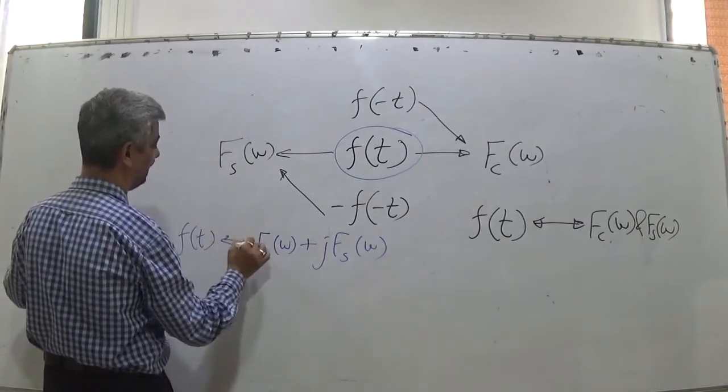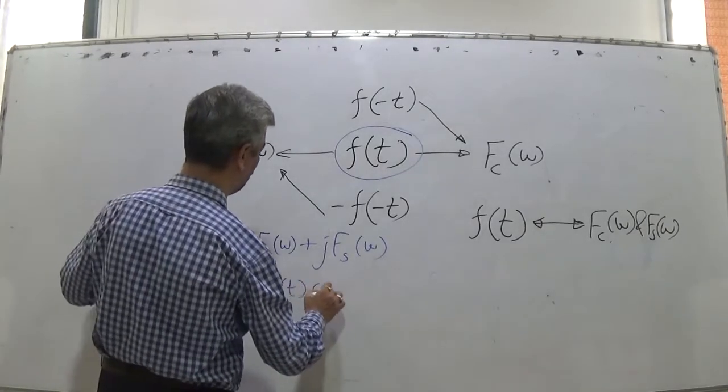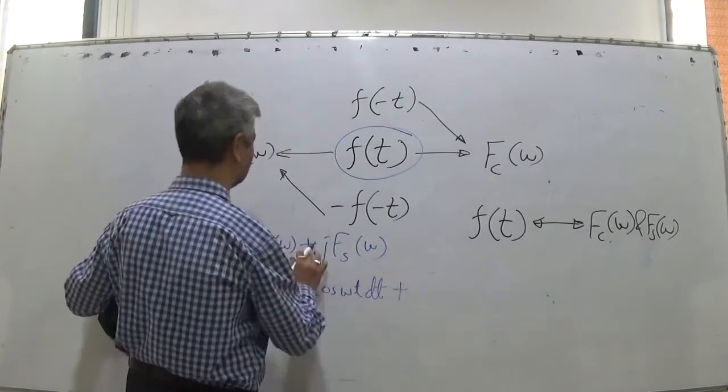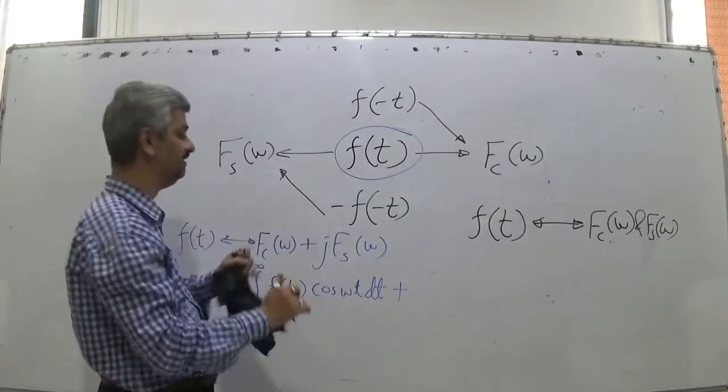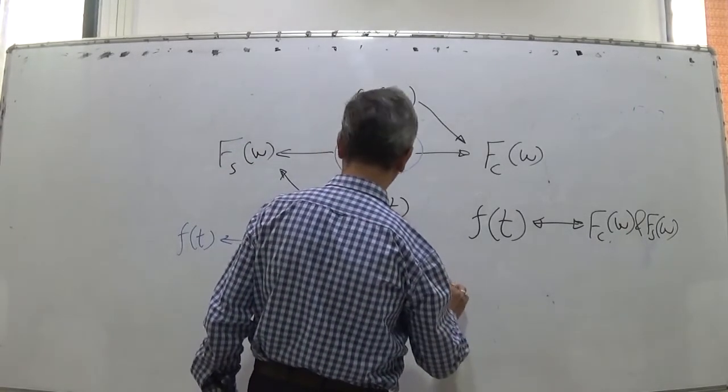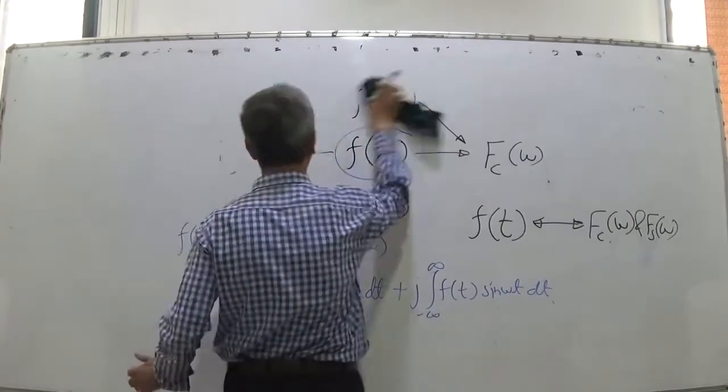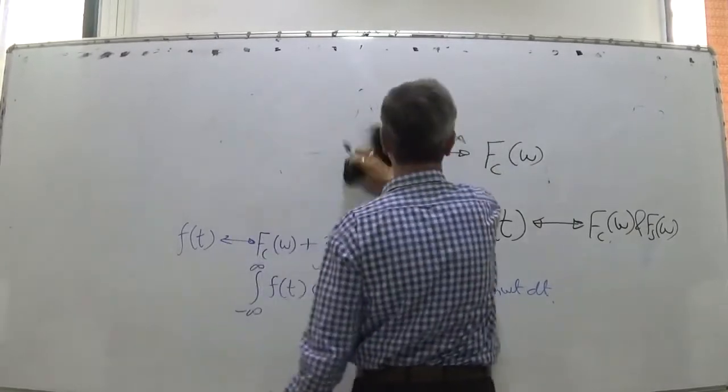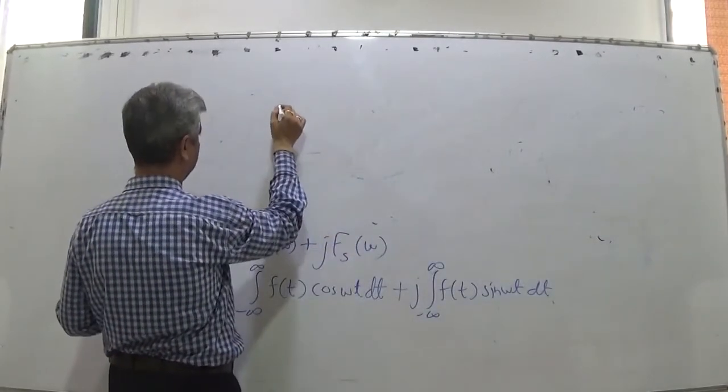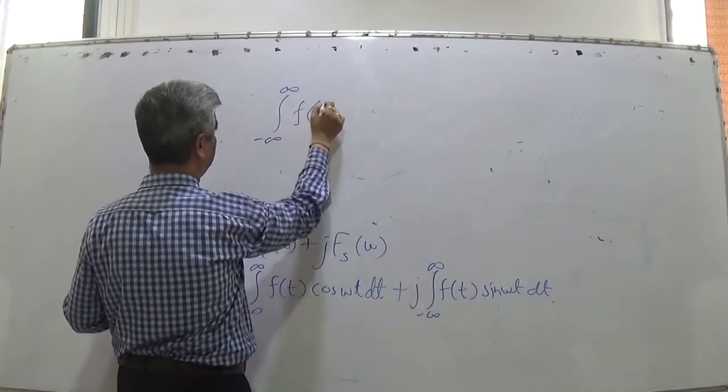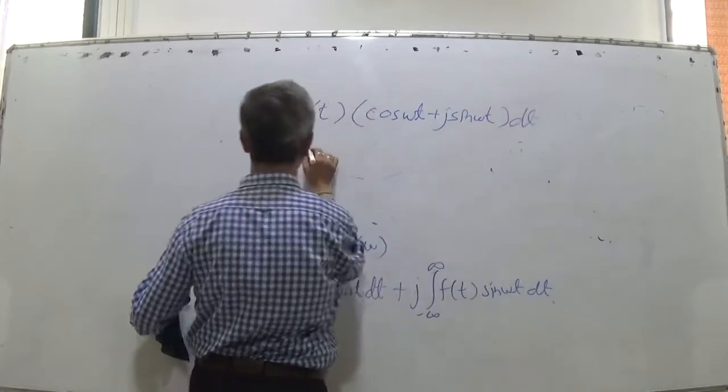So a pair: Fc(ω), how I get it, is ∫[-∞ to ∞] f(t)cos(ωt)dt. Plus j, it's a pair, these two are different entities. Just for the sake of expressing them in one, I say j into ∫[-∞ to ∞] f(t)sin(ωt)dt. Then since limits are the same, I can combine. And when I combine, it is ∫[-∞ to ∞] f(t)[cos(ωt) + j·sin(ωt)]dt.